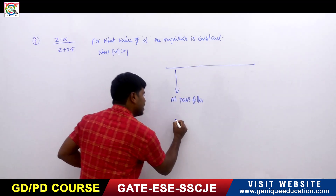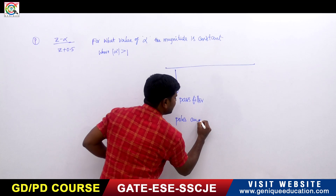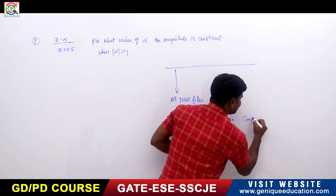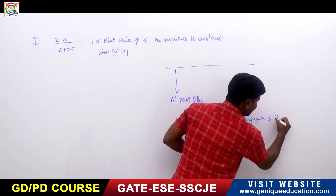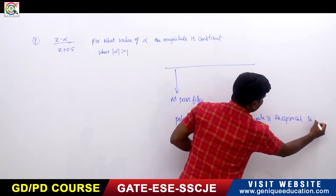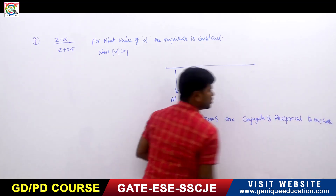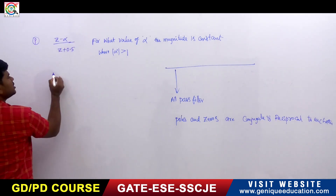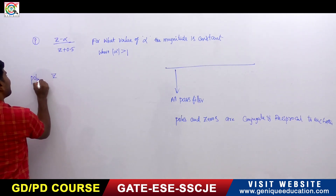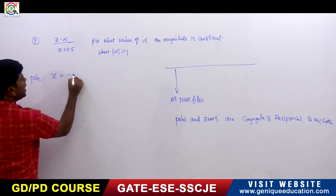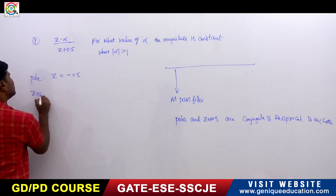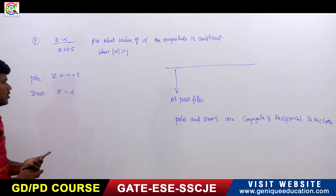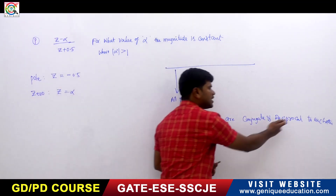For an all-pass filter, the very important property is that the poles and zeros are conjugate and reciprocal to each other. In this transfer function, the pole is at z = -0.5 and the zero is at z = α.